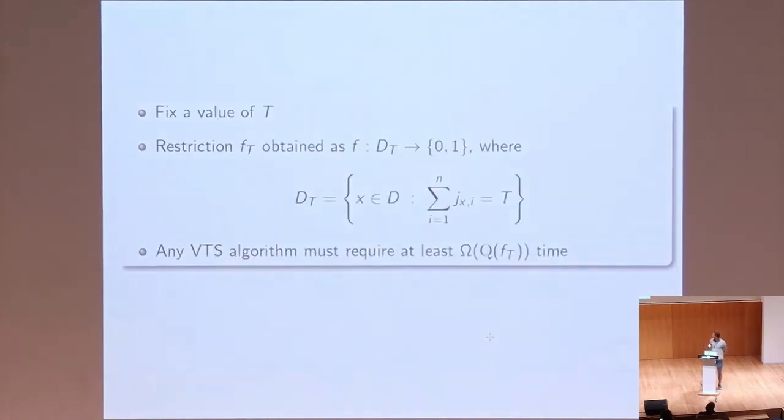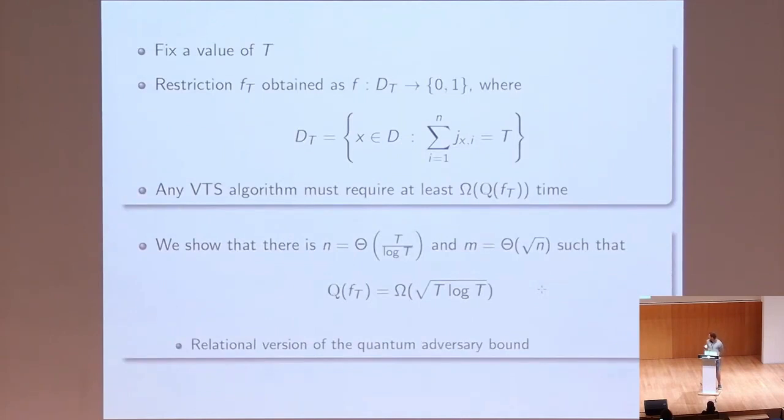So we will fix the value of the capital T and restrict our function to those inputs where these running times squared sum up to capital T. So any variable time search algorithm must spend at least as much time as the quantum query complexity of this partial function, and we show that for certain values of n and m, for these parameters used to define the function, the query complexity is of the necessary order. It comes with intrinsic arguments about the adversary bound of such a function.